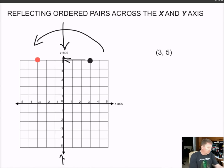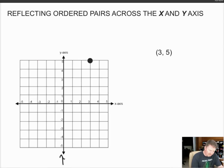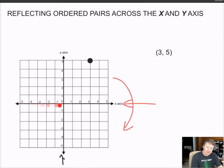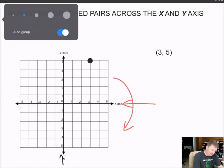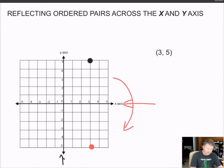Now let's reflect that same point across the x axis. I'm going to fold the page along the x axis, and the point is going to reflect downwards. My reflected point is five away from the x axis - one, two, three, four, five places away from the x axis down here. And that's all there is to this.